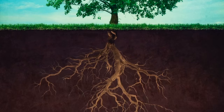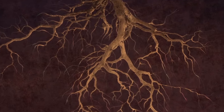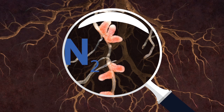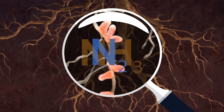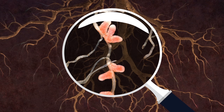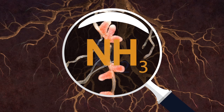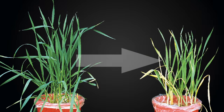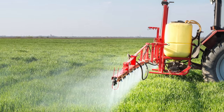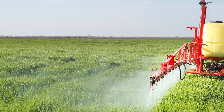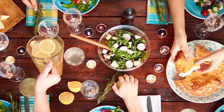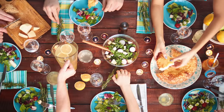Microbes help plants grow in other ways as well. They take a chemical called nitrogen and convert it so that it is in a form that can be used by plants. Without the power of nitrogen fixation, plants would be stunted or wouldn't grow at all. If we didn't have microbes, farmers would have to put a lot more fertilizer on their fields in order to make enough food to feed everyone.